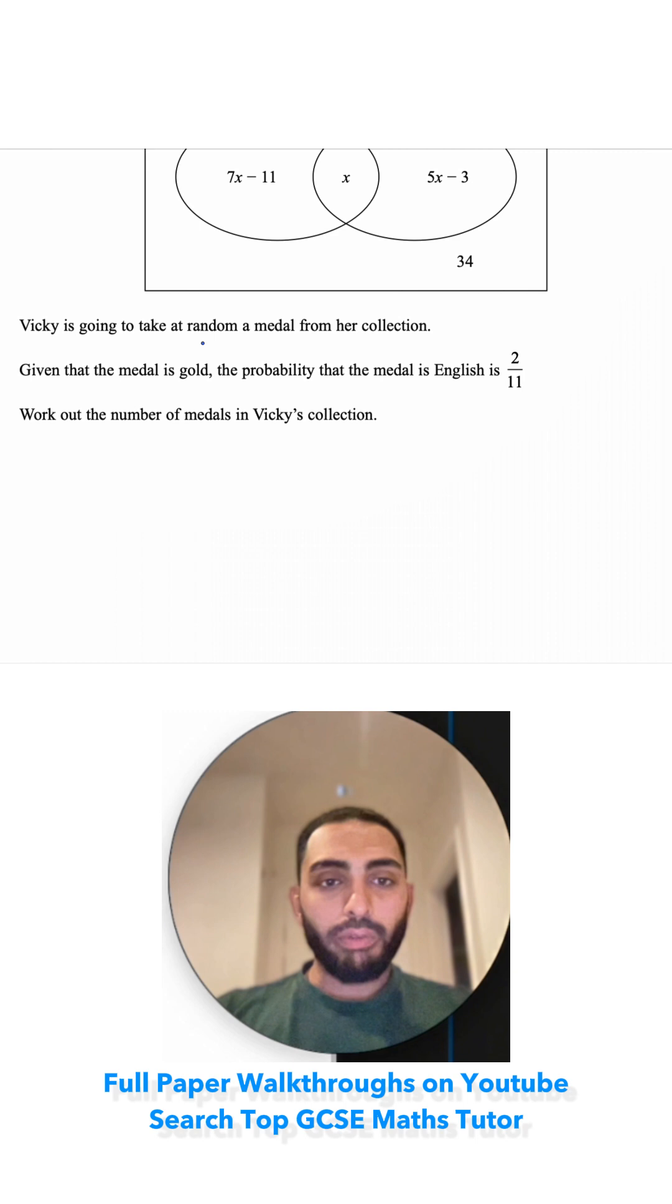Vicky is going to take out at random a medal from her collection. Given that the medal is gold, the probability that the medal is English is 2 over 11. Work out the number of medals in Vicky's collection.